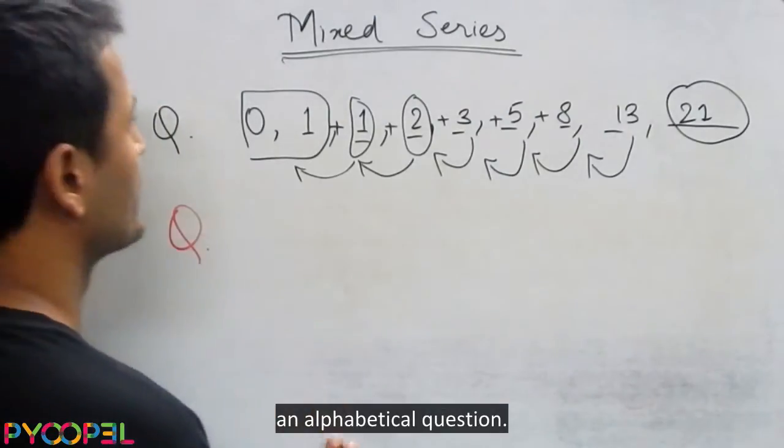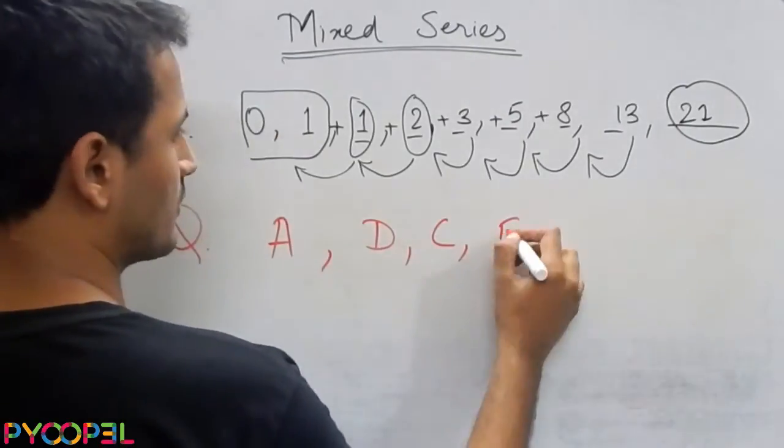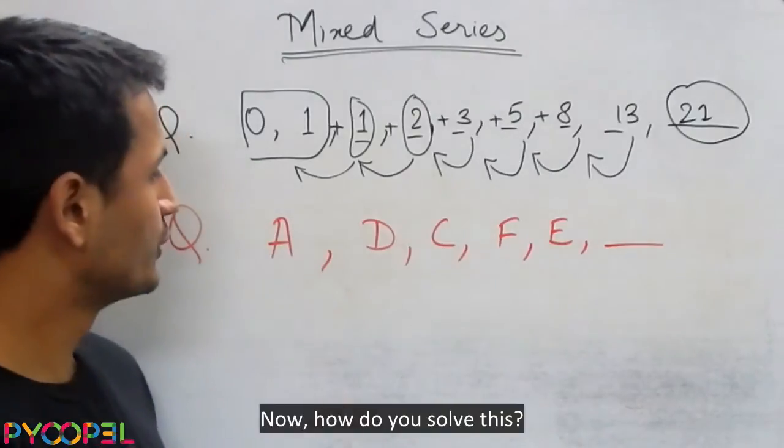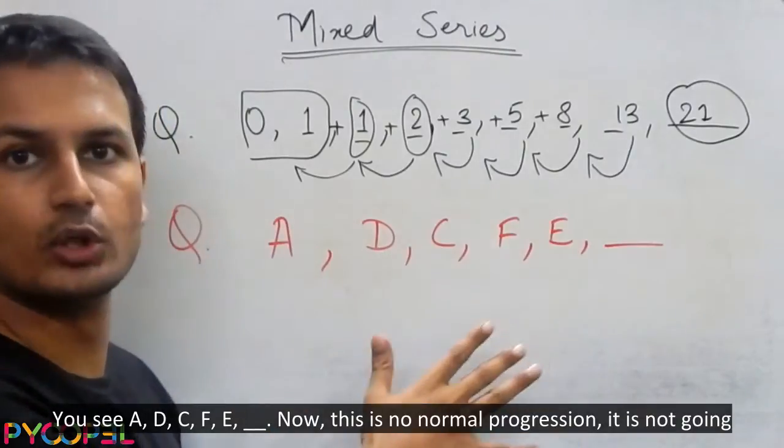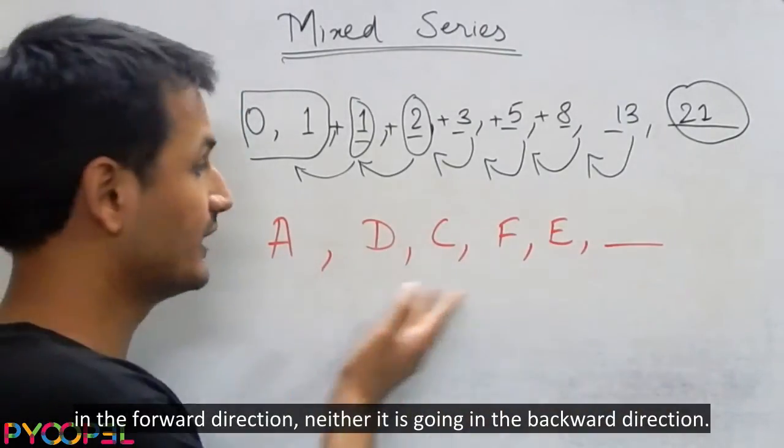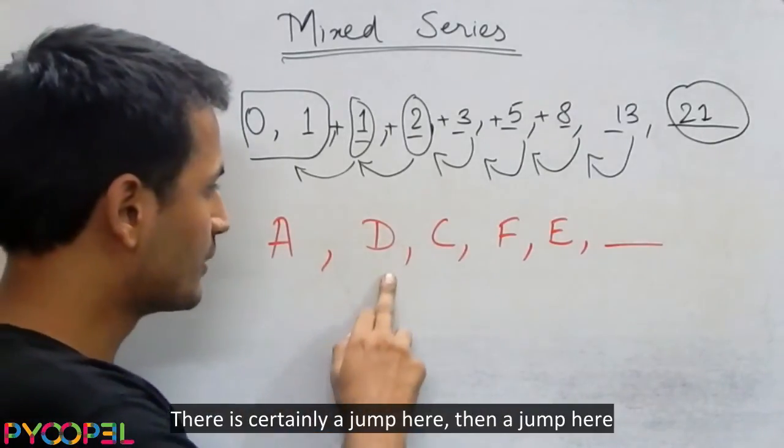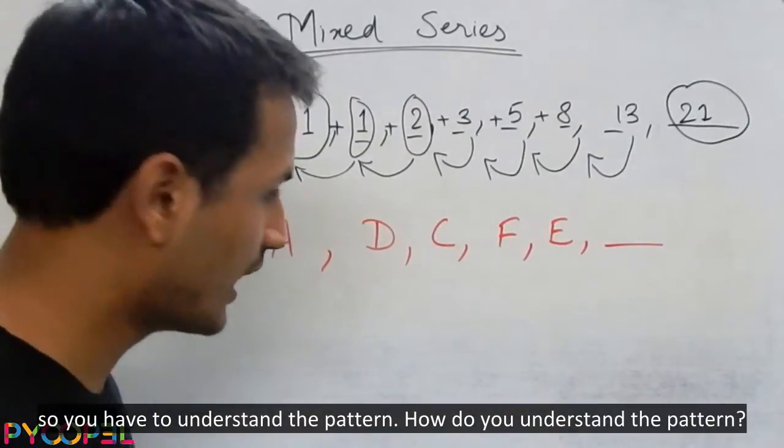Now let's take a look at an alphabetical question. How do you solve this one? You see A, D, C, F, E. Now this is no normal progression. It is not going in the forward direction neither it is going in the backward direction. There is certainly a jump here, then a jump here, then a jump here. So you have to understand the pattern.